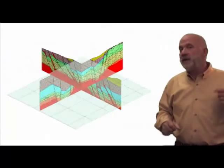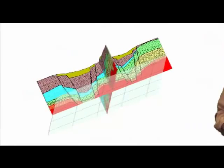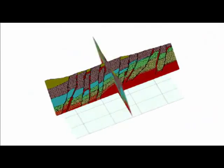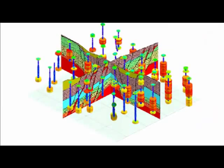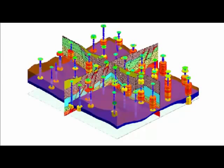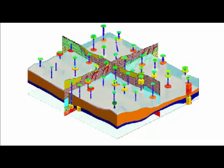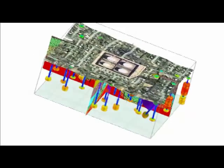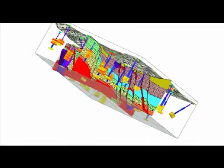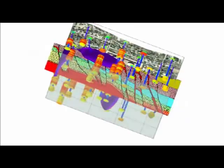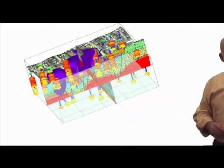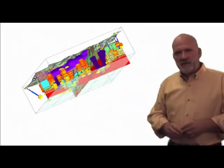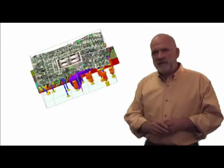We might also want to add other information stored within a RockWorks database, such as borehole diagrams, surface models, ISO surfaces of block models, draped air photos, and so on. In this fashion, you can integrate human and computer generated graphics within a three-dimensional environment.